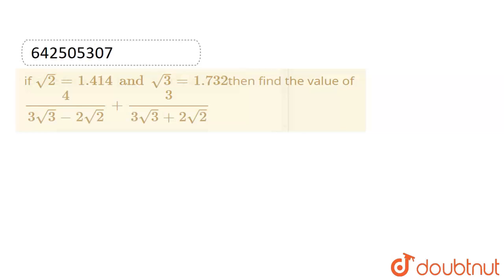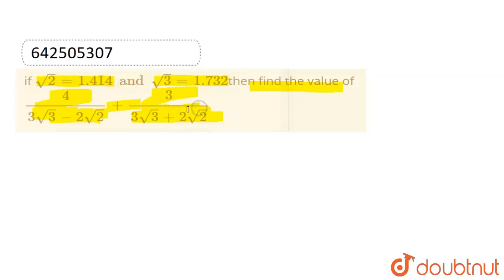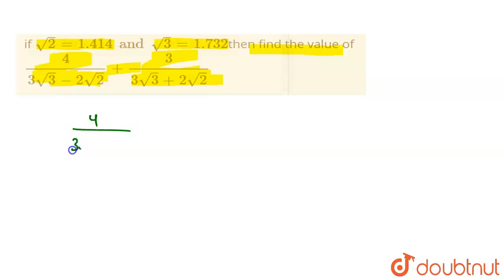Hello everyone, welcome to Doubtnut. The question is: if √2 = 1.414 and √3 = 1.732, find the value of 4/(3√3 − 2√2) + 3/(3√3 + 2√2). Let us consider the given expression: 4/(3√3 − 2√2) + 3/(3√3 + 2√2).